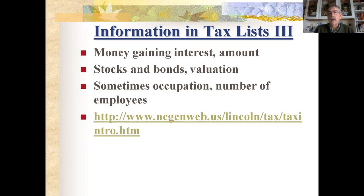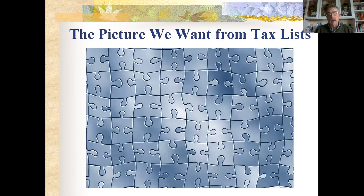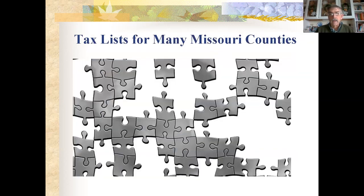Sometimes the list would include money gaining interest, stocks and bonds, and even occupation and number of employees for a business. Ideally you'd have a complete set of tax lists from when your ancestor turned 21 until they were too old to assess — you get this in places like Virginia where lists have survived. For many Missouri counties, unfortunately, you get gaps, and some counties have barely one or two pieces of that puzzle.